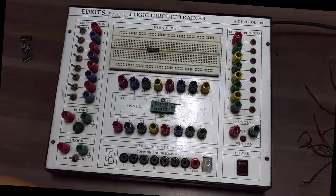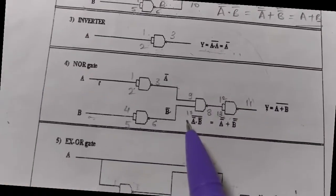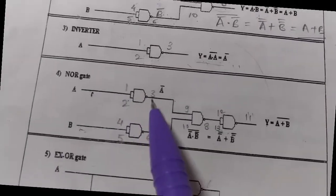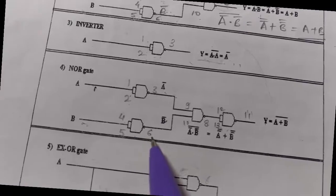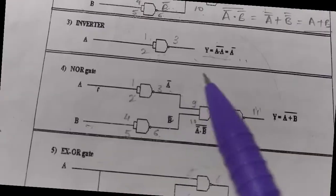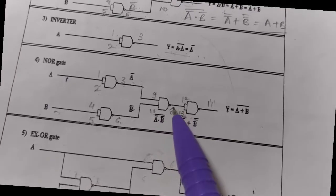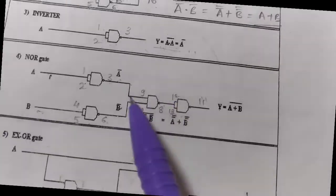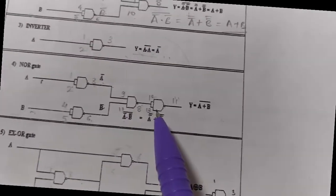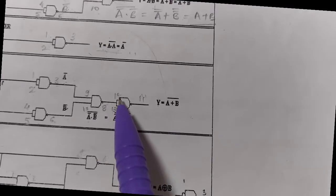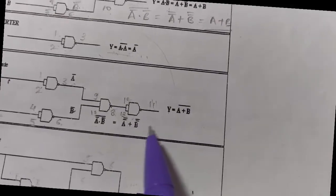Similarly we can obtain NOR gate with the help of NAND gate. First we short pin number 1 and 2 and take output from pin 3 to get A bar. The second gate shorts pins 4 and 5, output taken from pin 6 gives B bar. A bar and B bar at pins 3 and 6 are shorted with pins 9 and 10, and output is taken from pin 8. The output of gate 3 is given to gate 4 — pin 8 is connected to pins 12 and 13 (shorted together) and output is taken from pin 11. The final equation obtained is that of NOR gate.